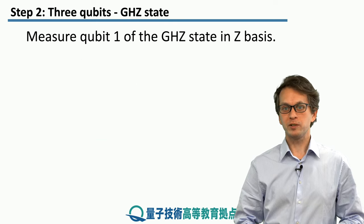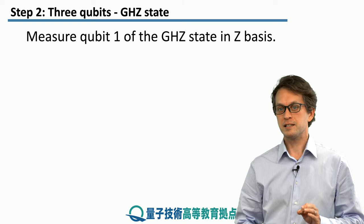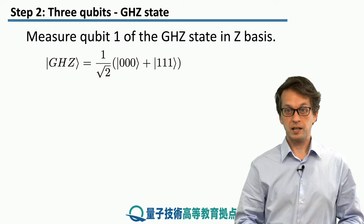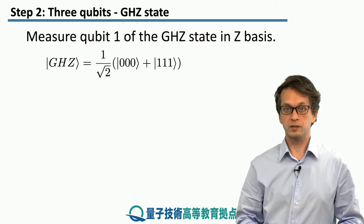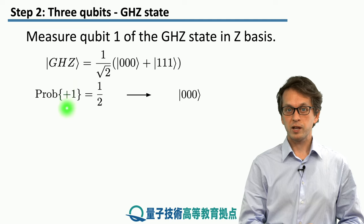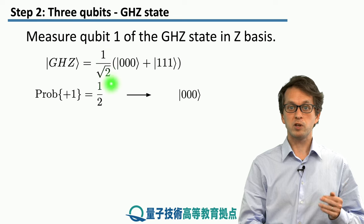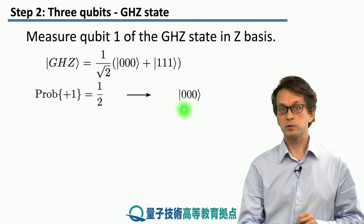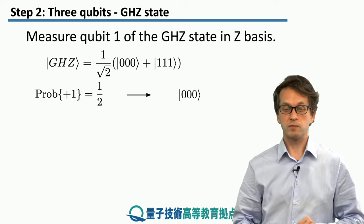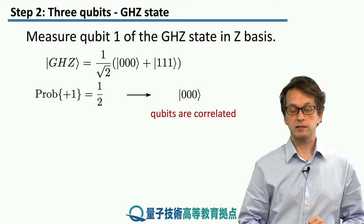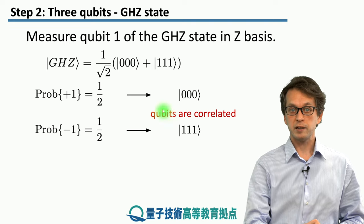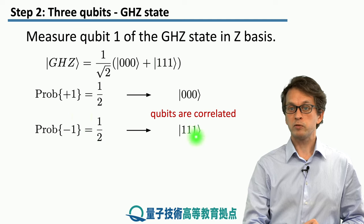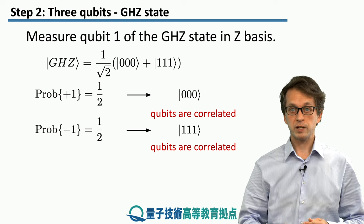Let's consider a measurement on one of the qubits of the three-qubit GHZ state in the Z basis — specifically qubit 1. Our three-qubit GHZ state is an equal superposition of 000 and 111. With probability one half, we can get the plus-one outcome, which projects qubit 1 onto zero, and the three qubits collapse onto 000. The other possibility is the minus-one outcome, which also happens with probability one half, and then all three qubits collapse onto 111. So we can see that the qubits are correlated.